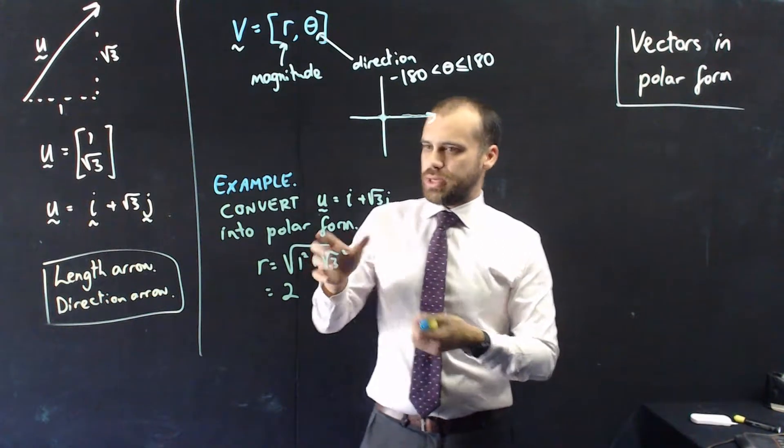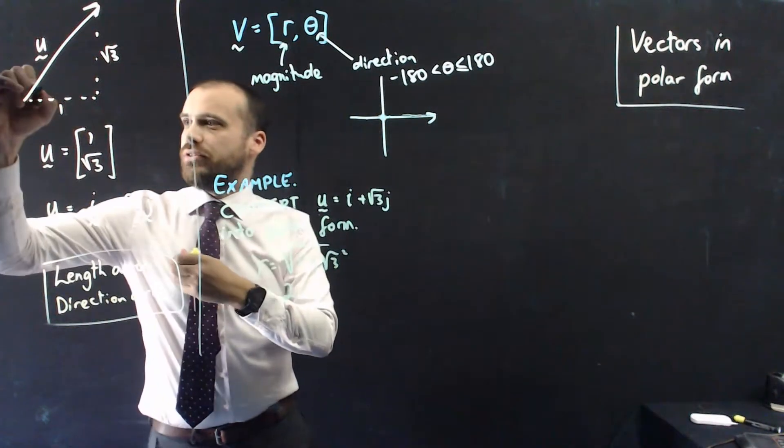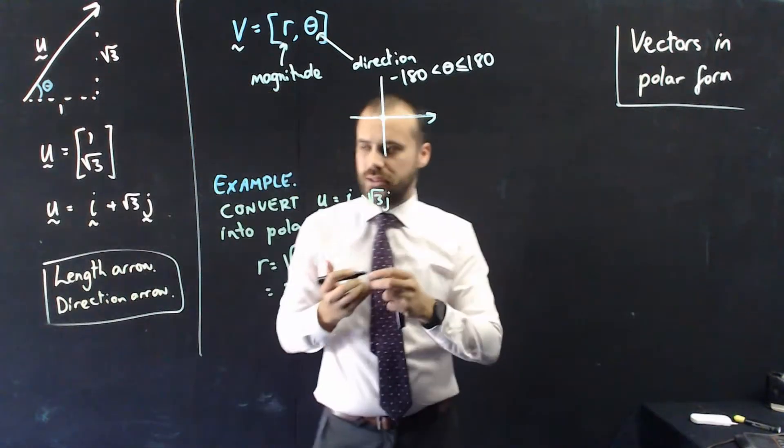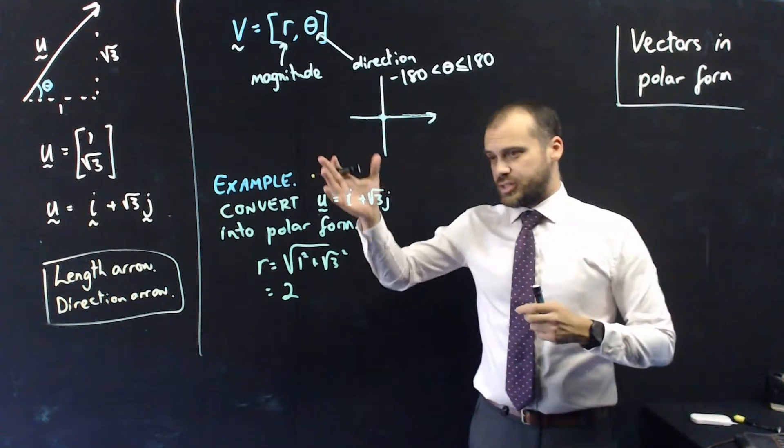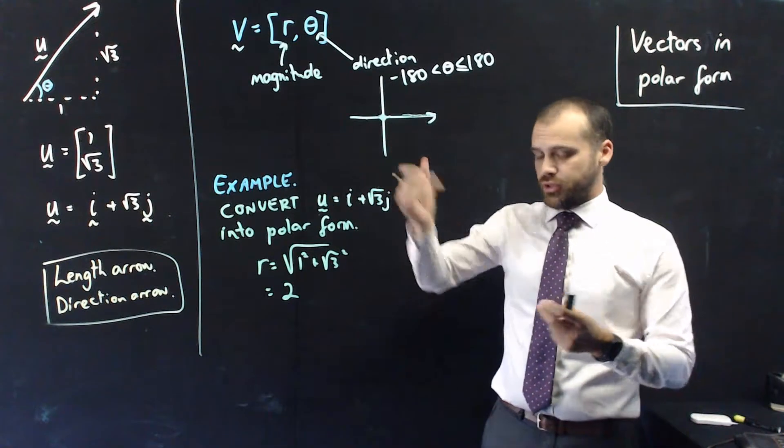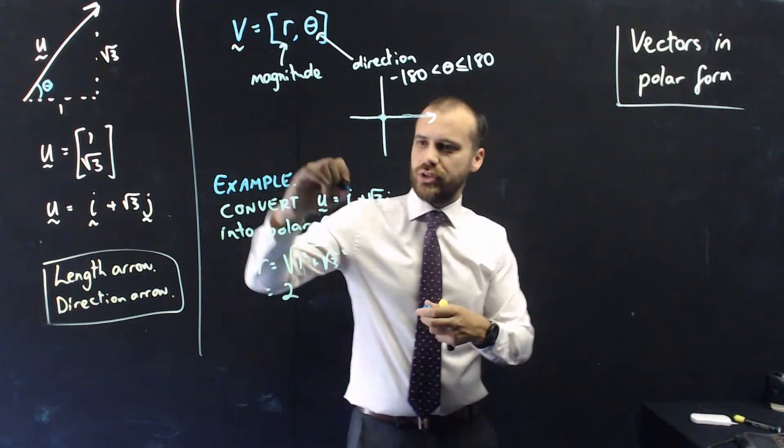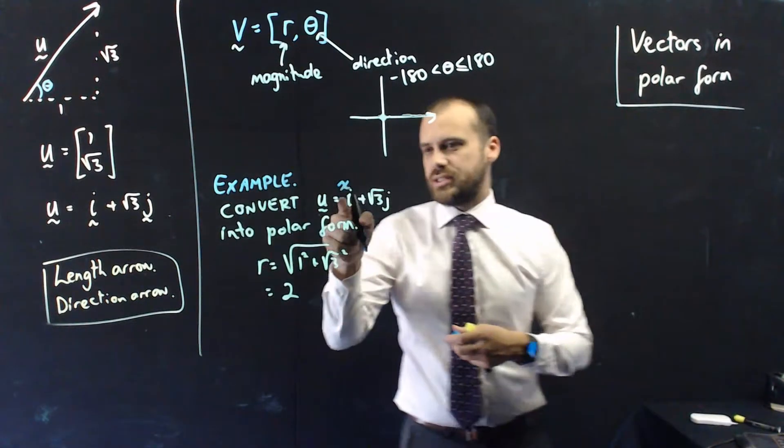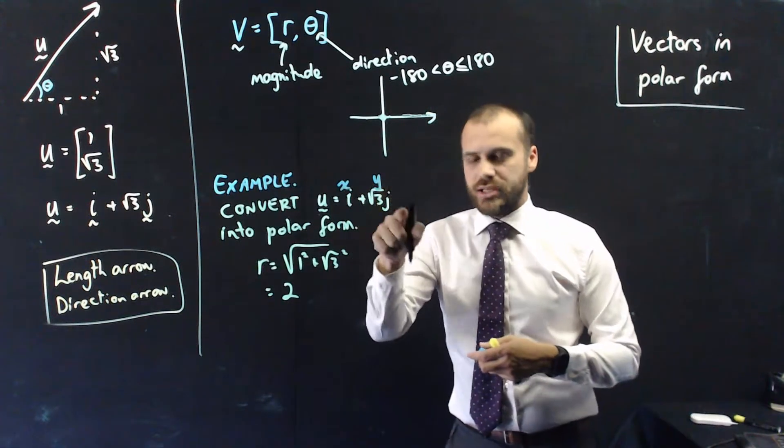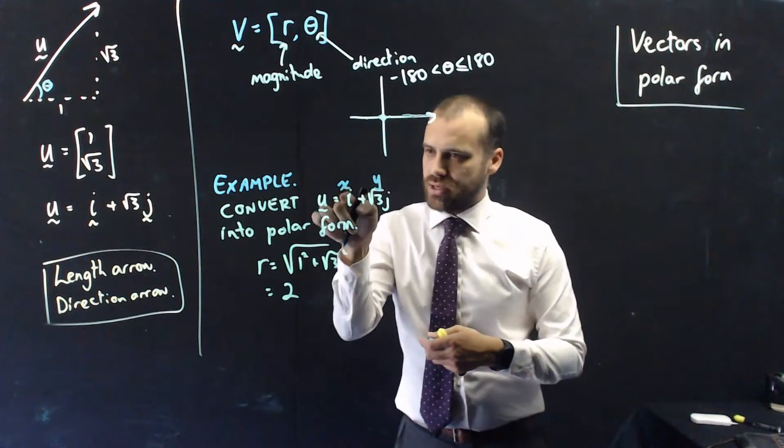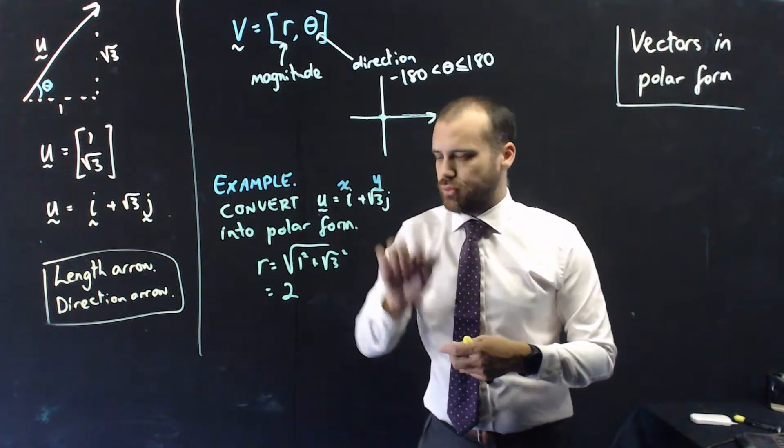And then the other bit is I need to be able to find this angle here. So, how am I going to find that angle? Any version of trig is going to sort of figure this out for you, but we have a nice little rule that we can follow. So, if we're trying to convert a vector, let's say it's xi and yj, so we use x and y to represent the coefficient of i and the coefficient of y.